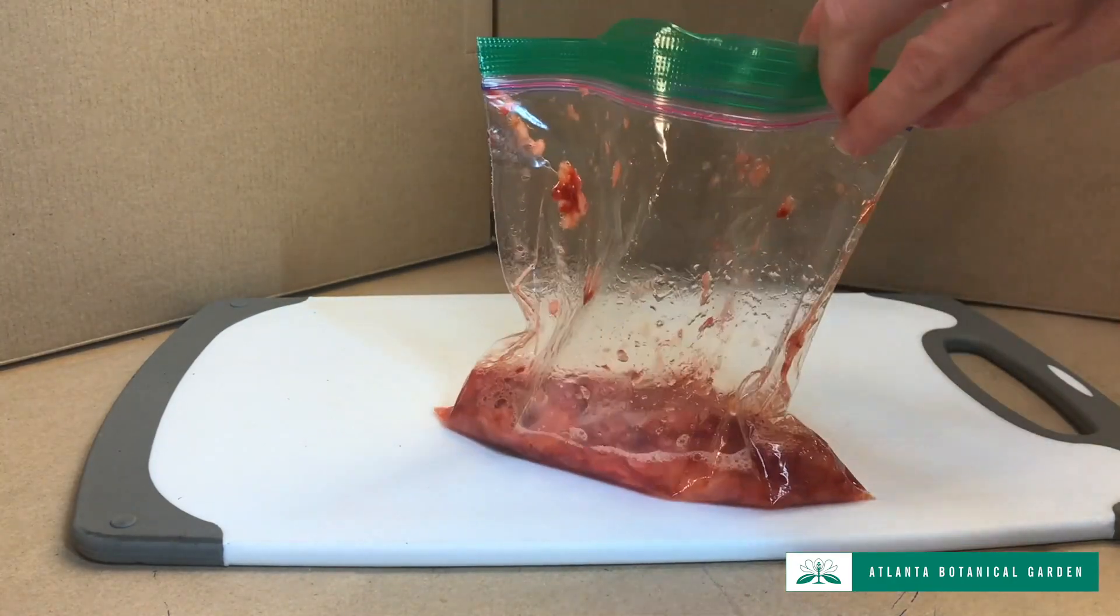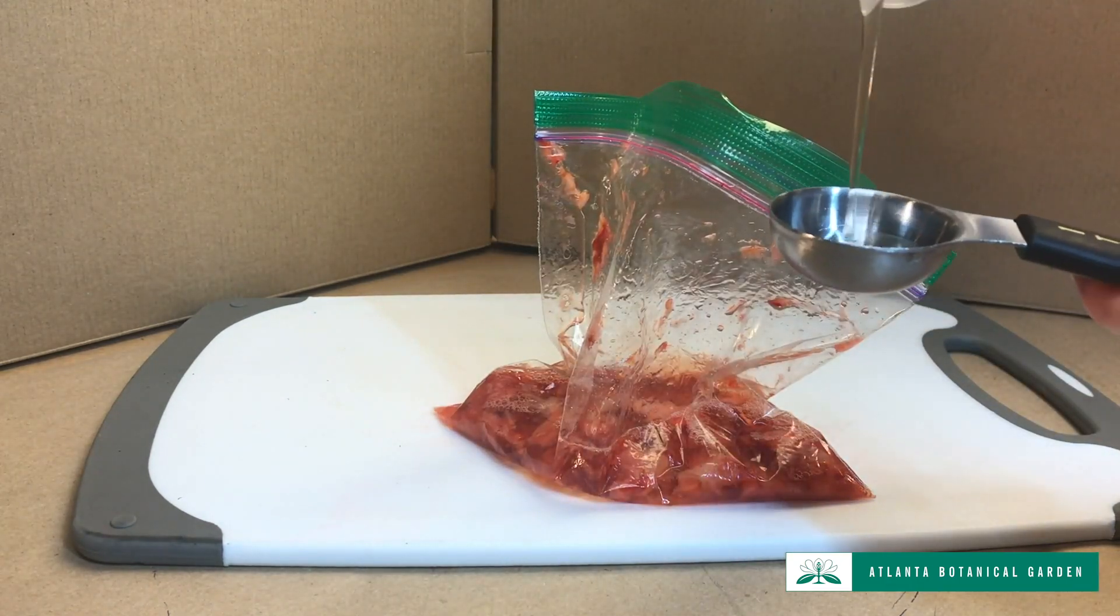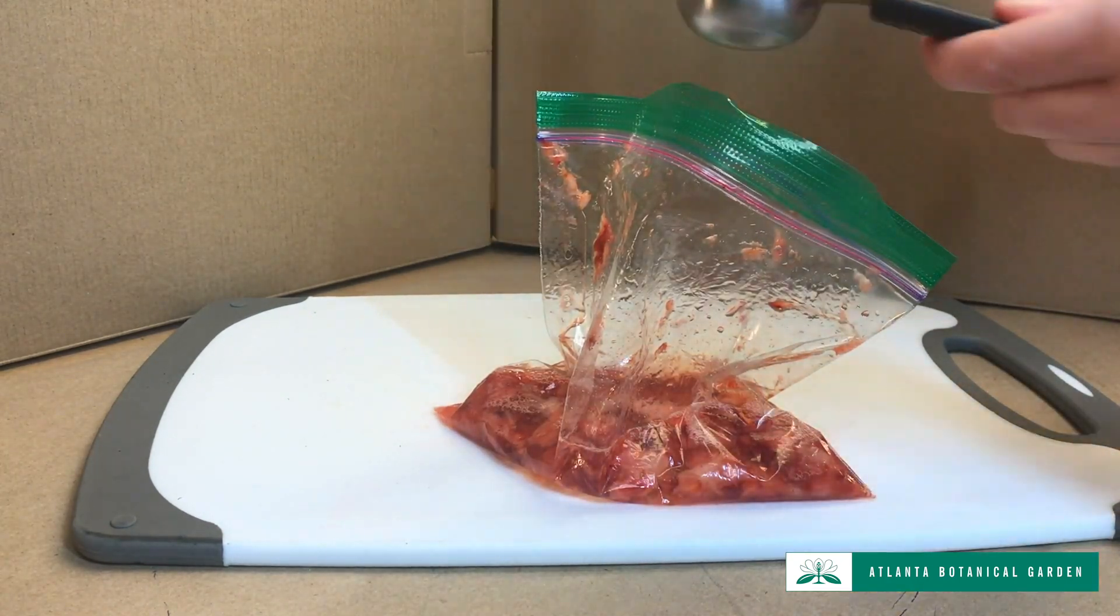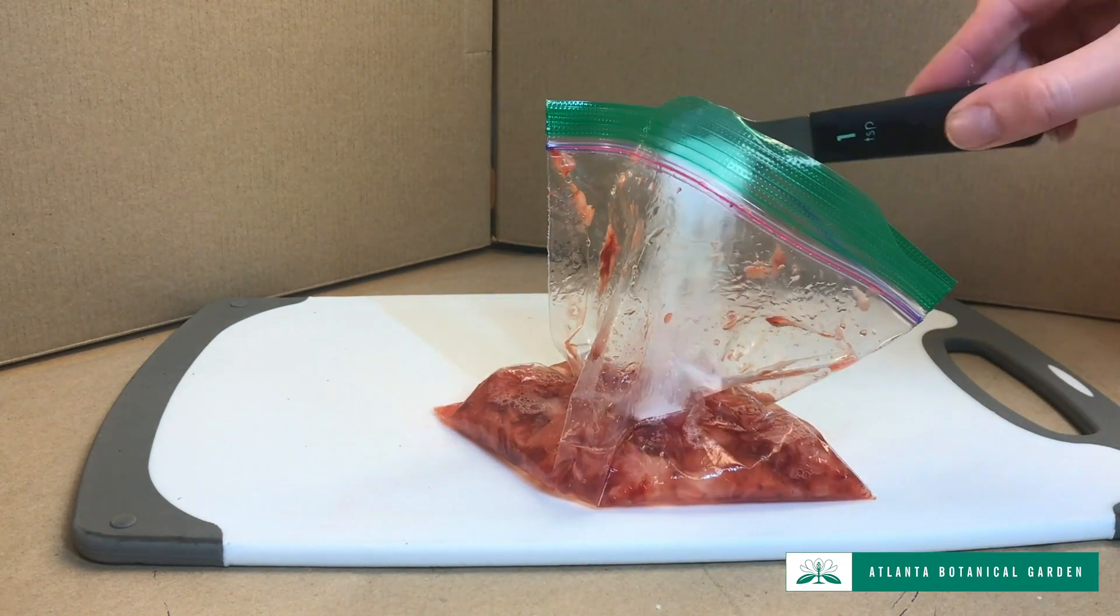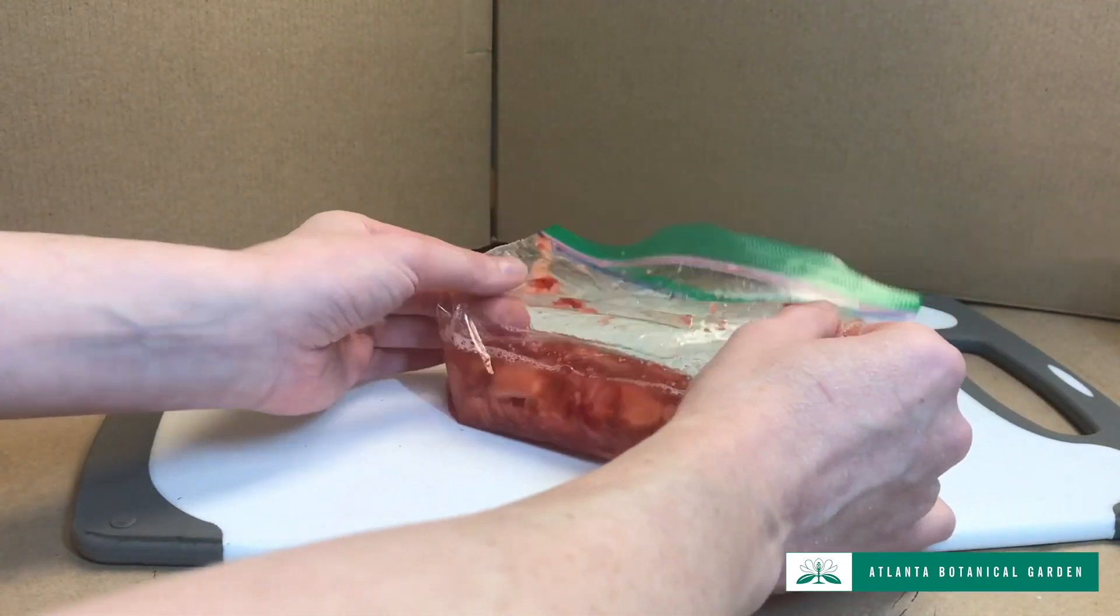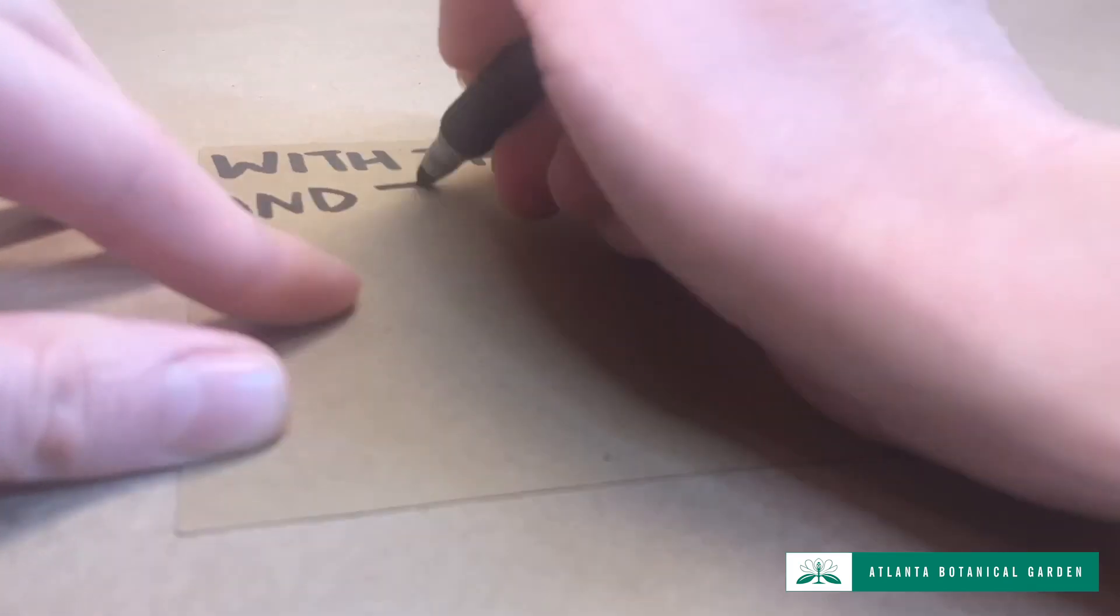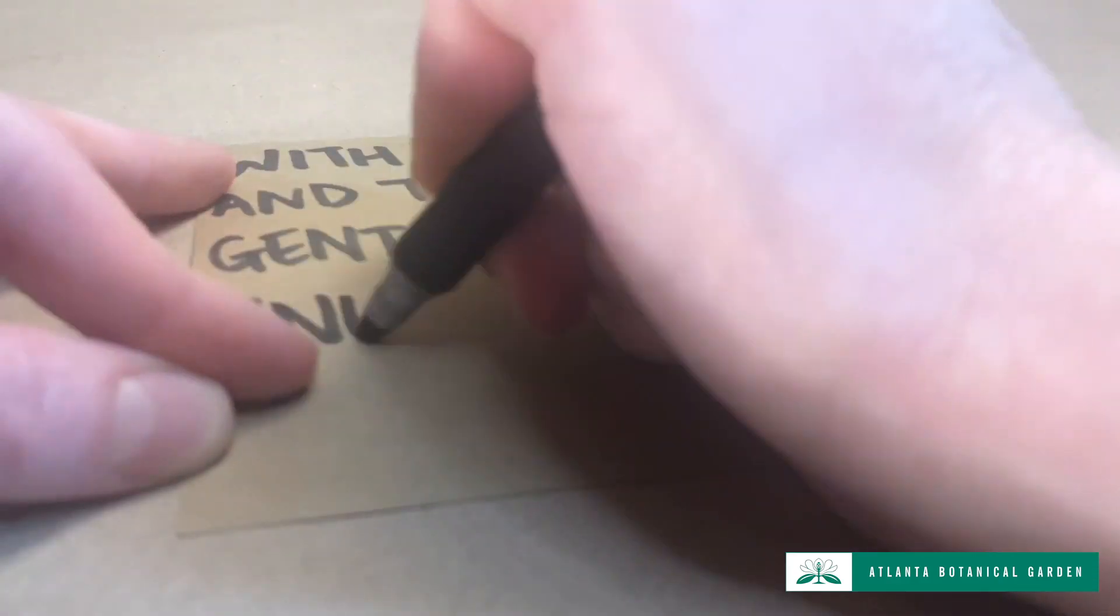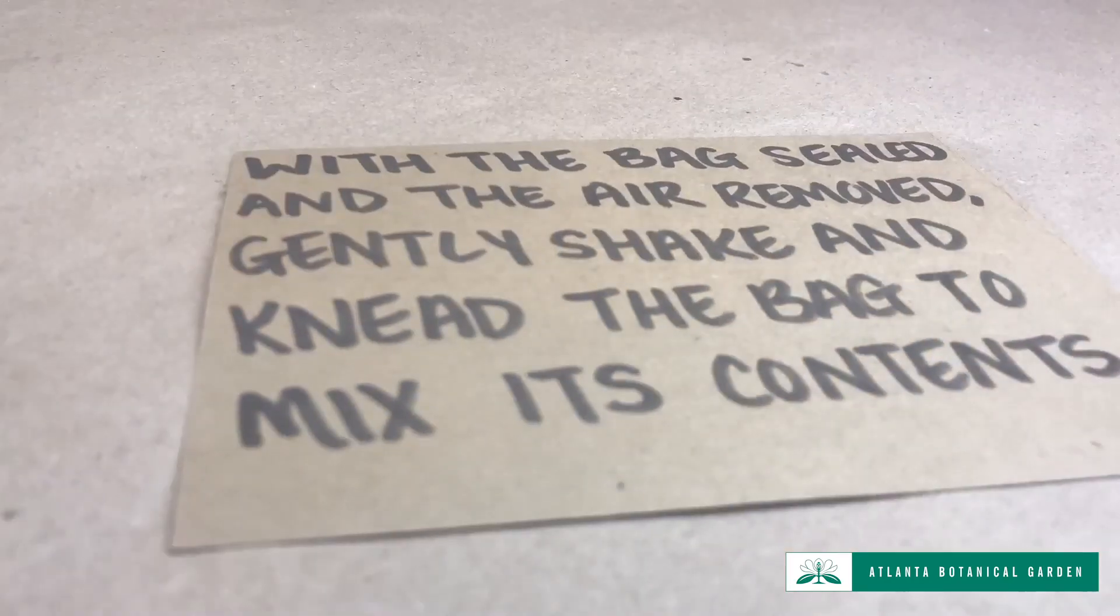The dish soap in this experiment works to break down the cell membrane and nuclear membrane of the strawberry cells, while the salt helps remove any protein bound to the DNA. With the bag sealed and the air removed, gently shake and knead the bag to mix its contents.